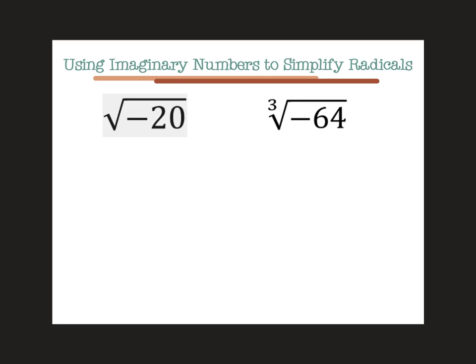So we would simplify by first getting this to just be positive 20. So we could break this down to negative 1 times 20. We previously would break down 20 as the square root of 4 times the square root of 5.